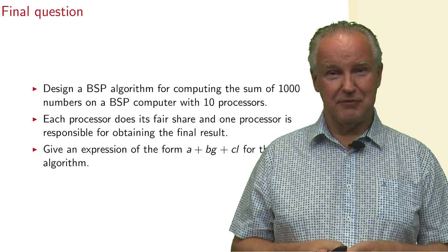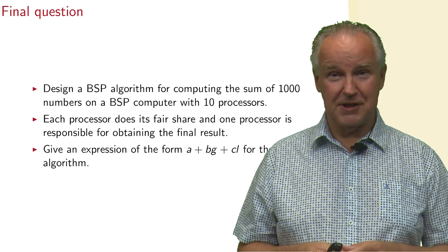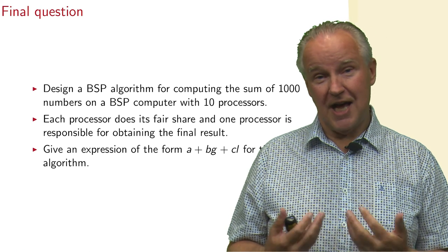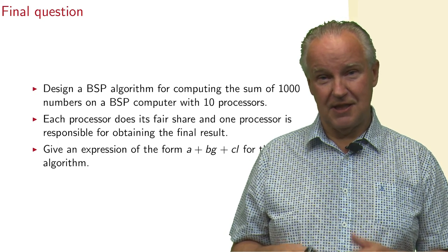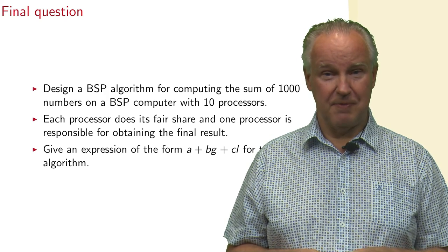Finally, I have a question for yourself, because now that you know the BSP model, you can think of a BSP algorithm for computing the sum of a thousand numbers on a BSP computer with ten processors. How would you do that? And then you have to take care that every processor does its fair share, and only one processor is responsible for the final result. So processor zero, for example, could have the final results. And then you should give an expression of the form A plus BG plus CL for the cost of the algorithm. And the answer to this question is available on my website with supplementary material for the book. There's a PDF file with answers to the final questions of my videos.